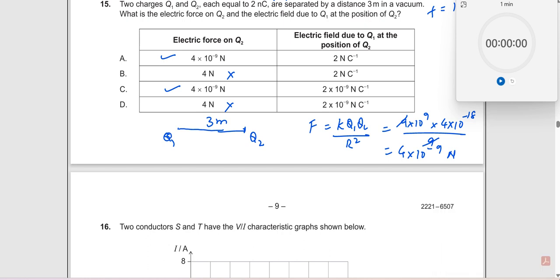Electric field due to q1 at the position of q2. You need to find the electric field at this point. So electric field at that point is nothing but k q1 divided by r squared. So what I will do is this is nothing but F by q2, because if I write k q1 q2 by r squared, I can write like this.